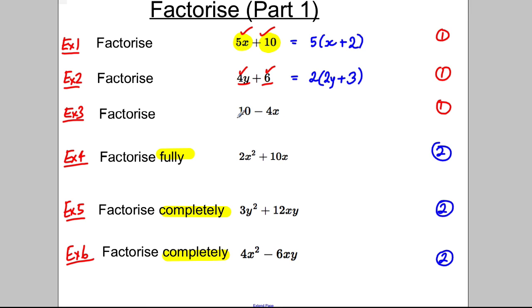The next one: the biggest factor that goes into 10 and 4x. Clearly it's some number because there's not an x in both. Is it 2, 4, 6, or 8? It's 2. So we take out a factor of 2. What must go here? 5. What must go here? Negative 2x. Check by multiplying out: 2 × 5 is 10, 2 × negative 2x is negative 4x.